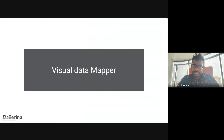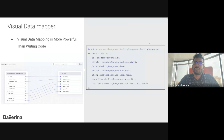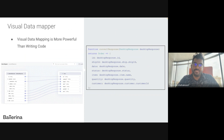Now let's talk about the Ballerina visual data mapper, which is very helpful when working with the BFF design pattern. The Ballerina visual data mapper is available through the Ballerina VS Code plugin and helps convert existing Ballerina data structures to another structure in a visual way. On the left-hand side you can see the visual mapping, and on the right-hand side you can see the generated code produced by the visual data mapper.